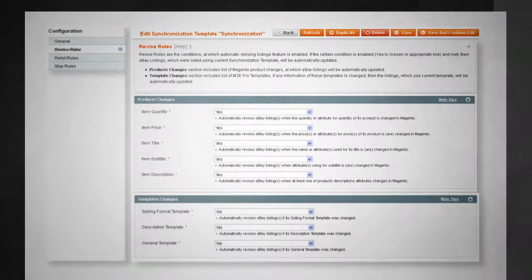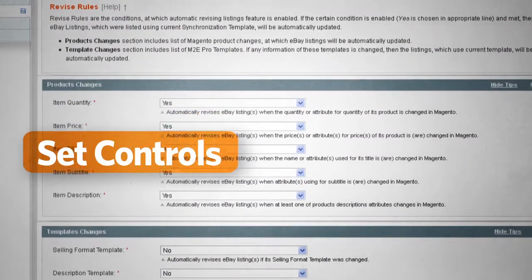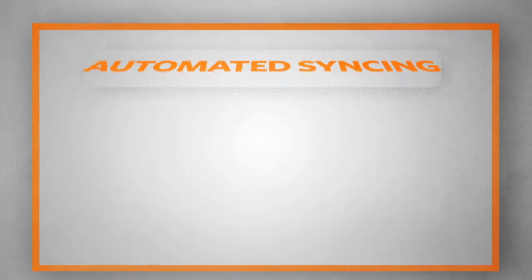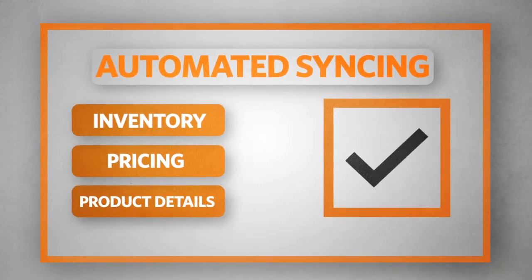Using M2E's intuitive interface, you can also set controls to manage your listings, including automated syncing of inventory, pricing, and product details.